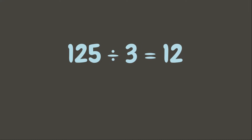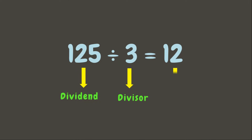First, let's have a quick recap on the parts of division. The first number, or the number that is being divided, is called the dividend, while the second number, or the number that divides the dividend, is the divisor, and our answer is what we call the quotient.